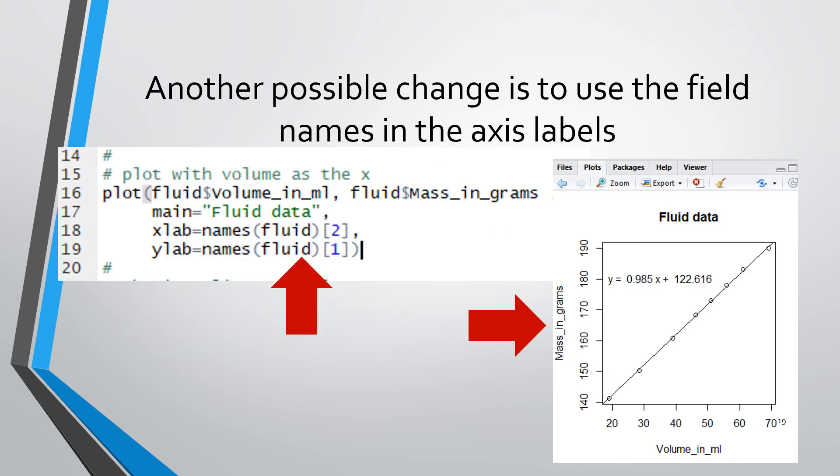Recall that fluid is the data frame and then it has fields which are named and that in fact that we renamed. And so here we're showing that we can use those names for the x label and y label. So previously we had xlab equals and we wrote something explicitly in quotes. But we can also use xlab equals names parentheses fluid square bracket two for instance. So this said fluid was our data frame. Names are the names of the field. There is a vector or an array of names and then the x label in this case happened to be the second one. Whereas the y label happened to be the first one.